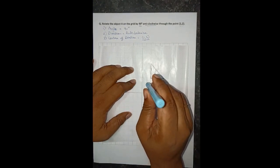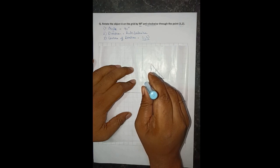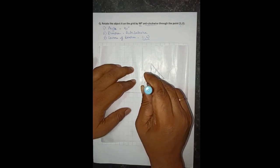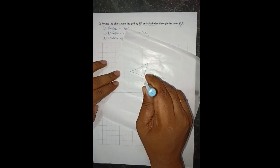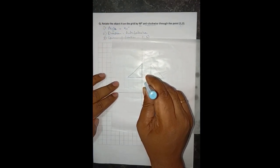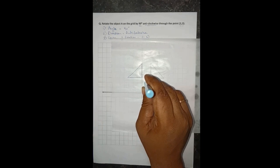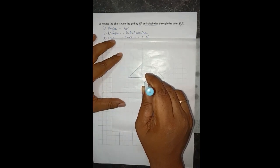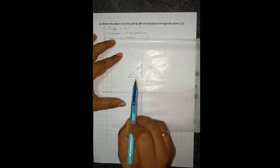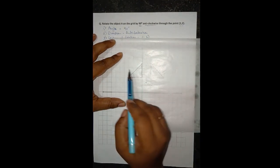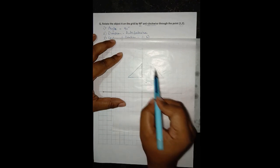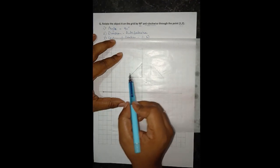Now what I'll have to do is I have to put my pen, the tip of my pen, on the center of rotation and I have to rotate this tracing paper 90 degrees along the axis. There it is, now I have rotated the tracing paper 90 degrees and as you can see the object which was originally here is now shifted to this part of the grid.